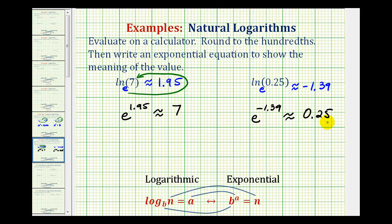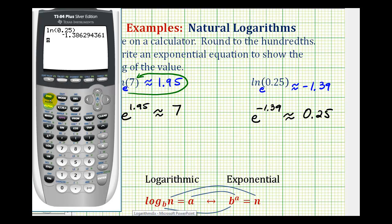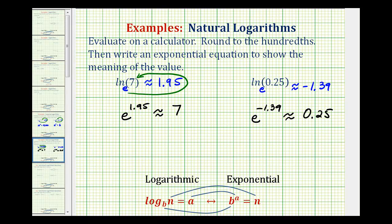Let's go ahead and verify this as well. So second ln negative 1.39, close parenthesis, press enter. And notice how the value is approximately 0.25. Again, e raised to the power of negative 1.39 is approximately 0.25.